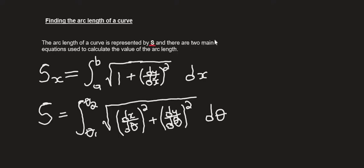There are two main equations used to calculate the value of the arc length S. One gives the arc length in terms of x, and the other in terms of the parametric form. The lower limit is t₁ and the upper limit is t₂.